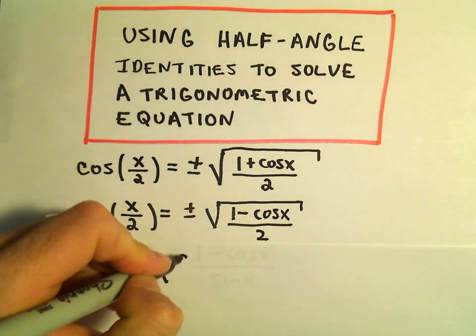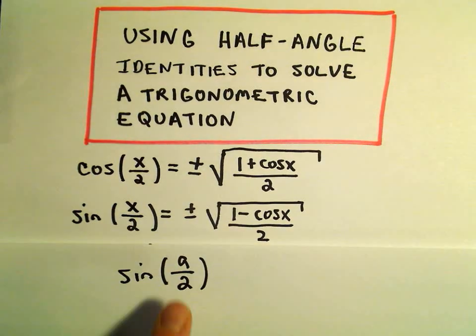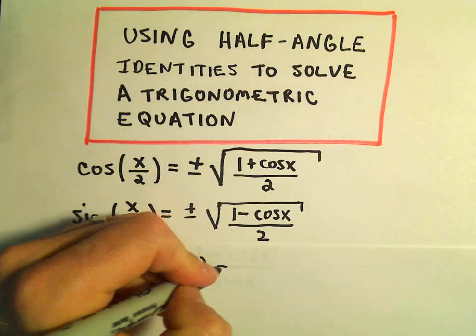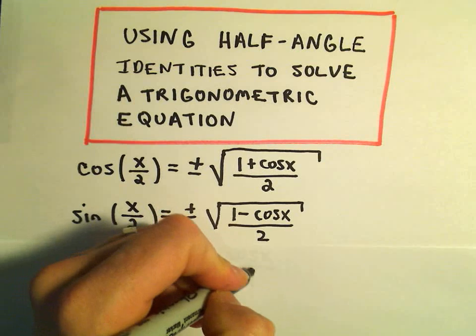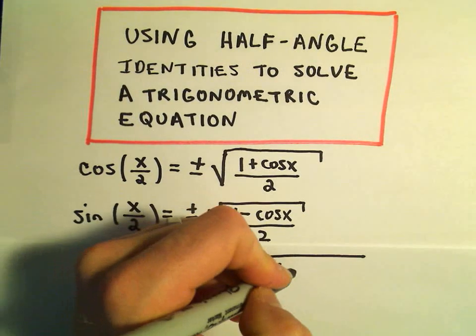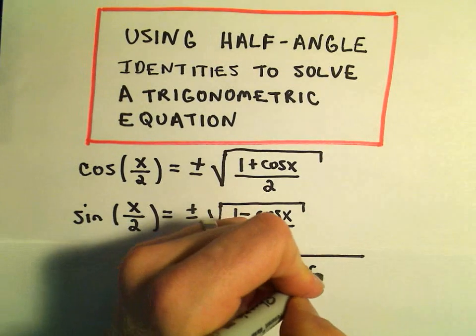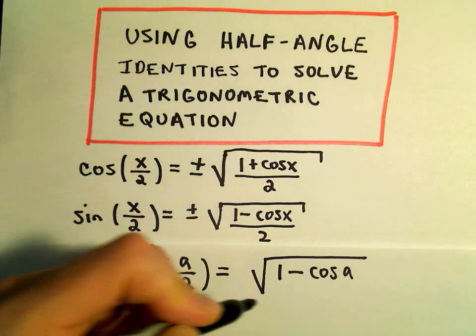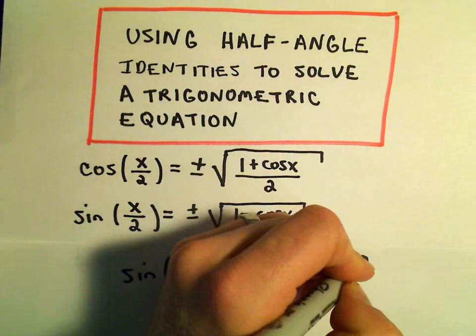So sine of a over 2, since our angle was in quadrant 1, we'll use the positive square root. And then it says we would simply get 1 minus cosine of a over 2.